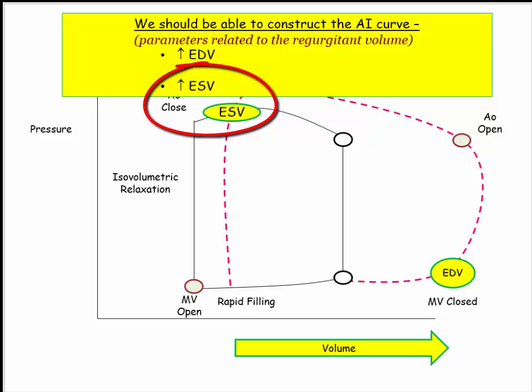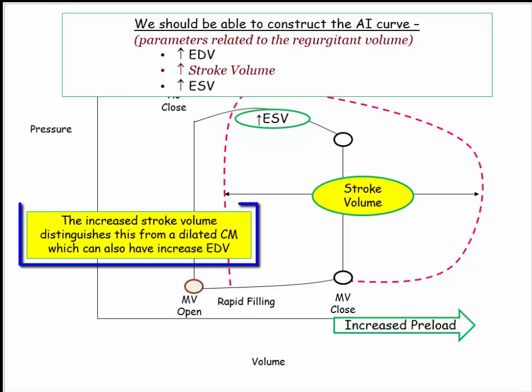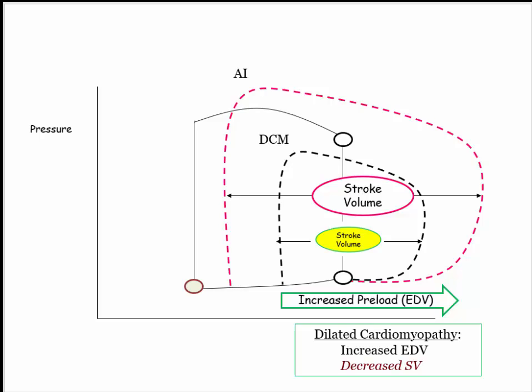As a result of valvular incompetence, the end-systolic volume must also be increased — blood is pouring back into the left ventricle through the regurgitant valve. So we have both an increased end-systolic volume and an increased end-diastolic volume. The stroke volume, represented by the area within the curve, is increased in this volume overload state. Compare this with dilated cardiomyopathy, which also has an increase in end-diastolic volume, but the stroke volume is diminished — so there should be no confusion between the two curves or conditions.